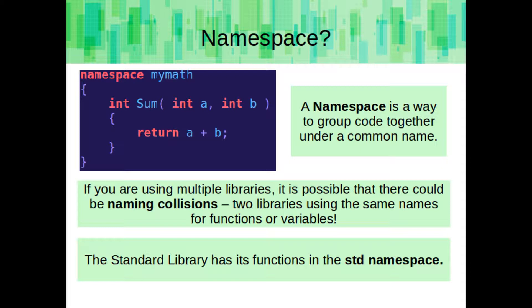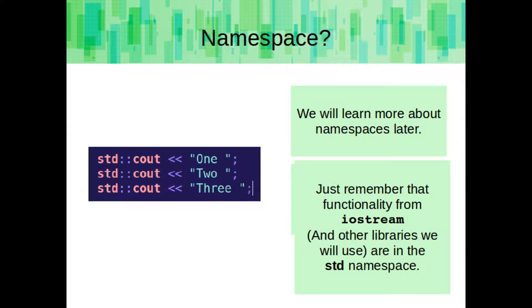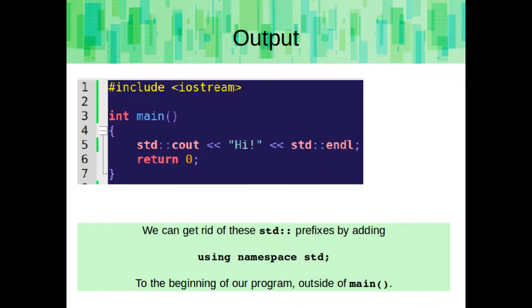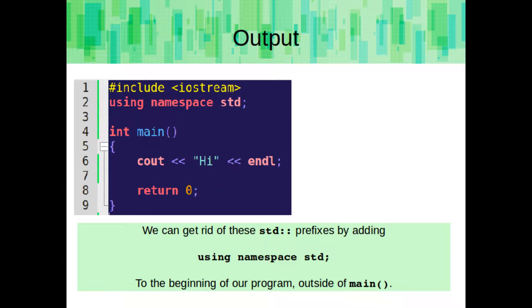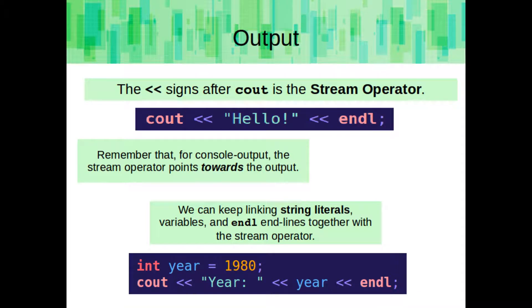A namespace is a way to group code together under a common name. If you are using multiple libraries, it is possible that there could be naming collisions — two libraries using the same name for functions or variables. The standard library has its functions in the std namespace. We can get rid of the std prefix by adding 'using namespace std' to the beginning of our program outside of main. The two less-than signs after cout are a stream operator — for console output, the stream operator points towards the output. We can keep linking string literals, variables, and endlines together with the stream operator.